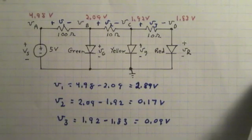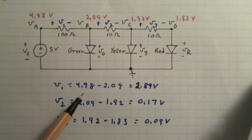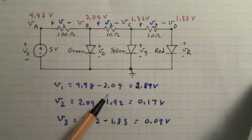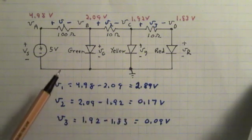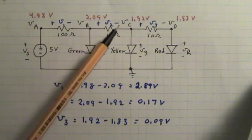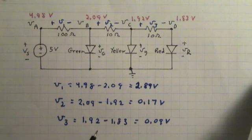So we are able to predict from the node voltage values that V1, the voltage across the 100 ohm resistor, is 4.98 minus 2.09 or 2.89 volts. V sub 2 would be 2.09 minus 1.92 or 0.17 volts. And V3 would be the node voltage at C minus the node voltage at D, which is 0.09 volts. These are to within our 10 millivolt accuracy limits.